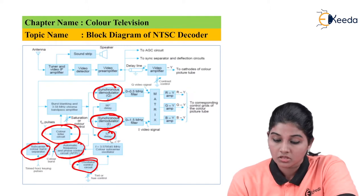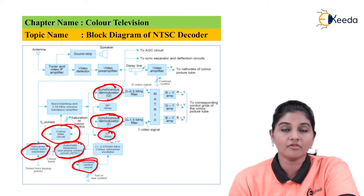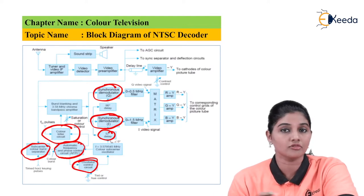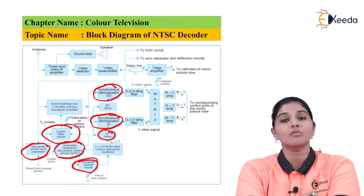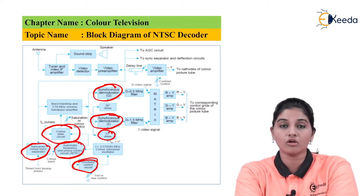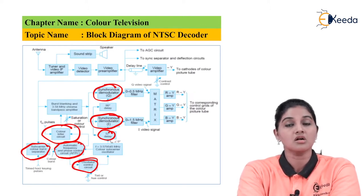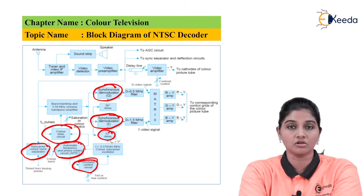The video amplifier is used for increasing the strength of the signal so that it can drive the display system. This is the NTSC decoder, or NTSC receiver, which is used in color television and operates on a frequency of 60 hertz.